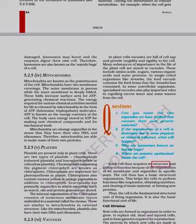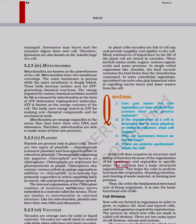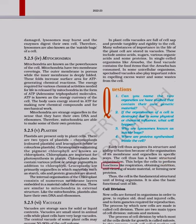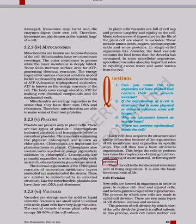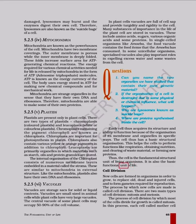Each cell thus acquires its structure and ability to function because of the organization of its membranes and organelles in specific ways. The cell thus has a basic structural organization. This helps the cells to perform functions like respiration, obtaining nutrition, and clearing of waste material, or forming new proteins. Thus, the cell is the fundamental structural unit of living organisms. It is also the basic functional unit of life.